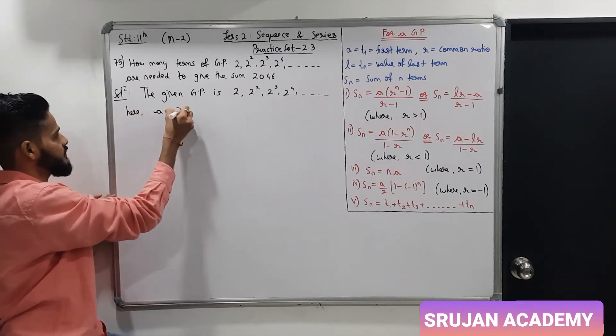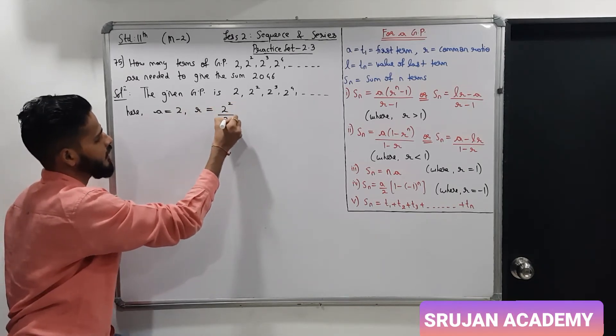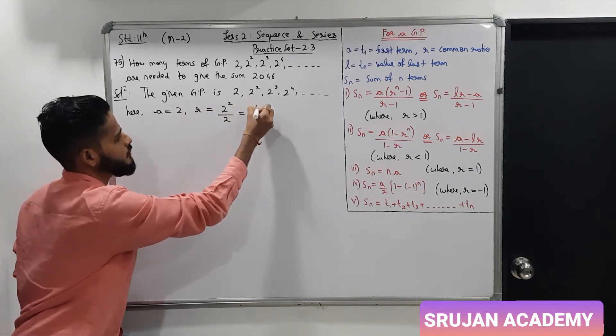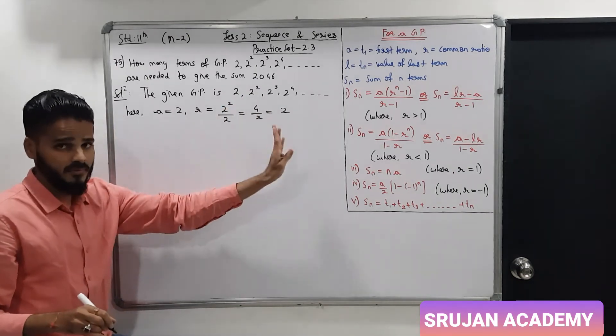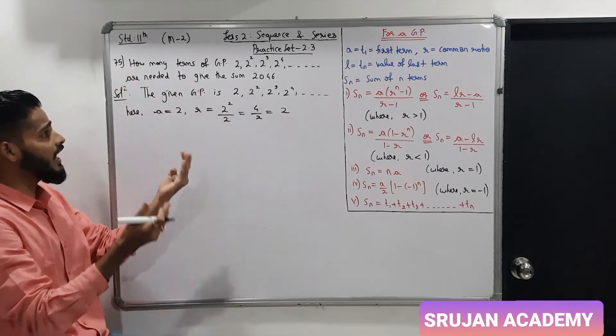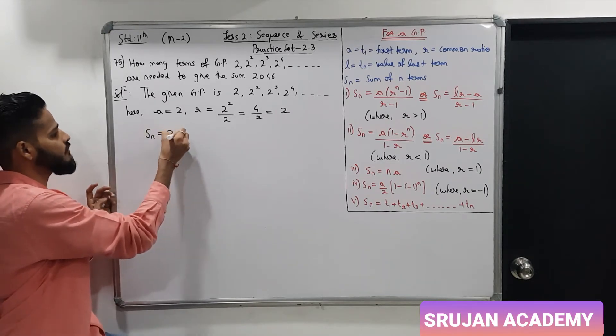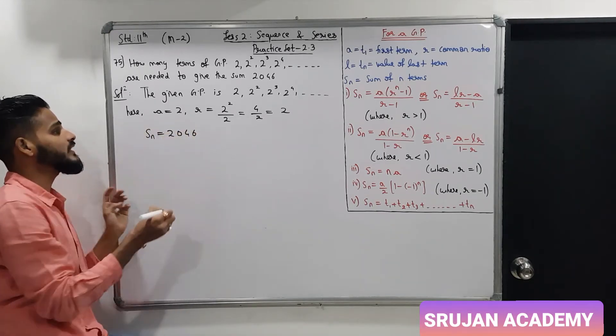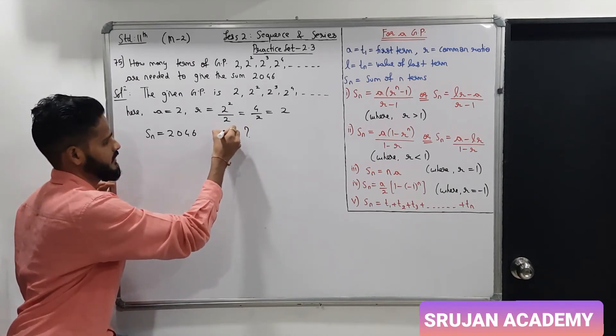The given GP is 2, 2 square, 2 cube, 2 raise to 4 and so on. Here, the first term is 2, r common ratio is t2 upon t1, 2 square upon 2, 4 by 2 which is 2. So, common ratio r is 2. And here, how many terms of the GP are needed to give the sum 2046? Sn is 2046 and we have to find the value of n.